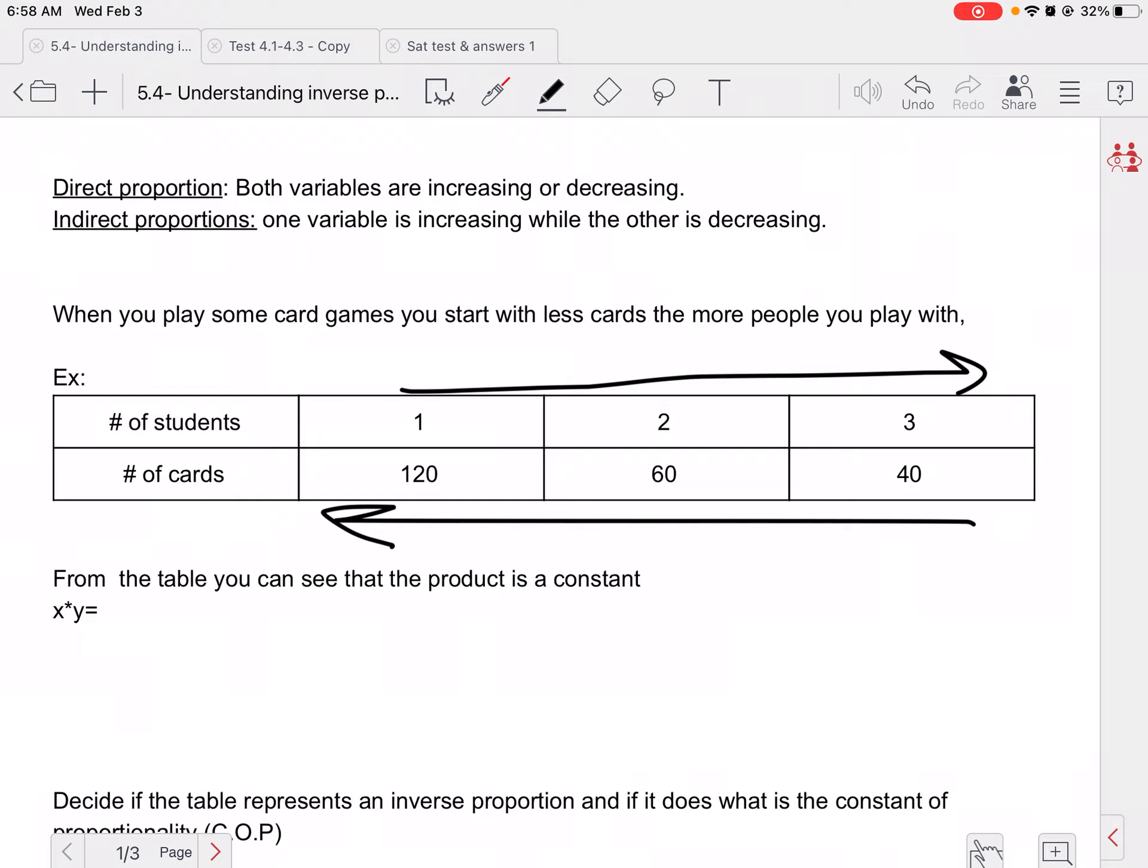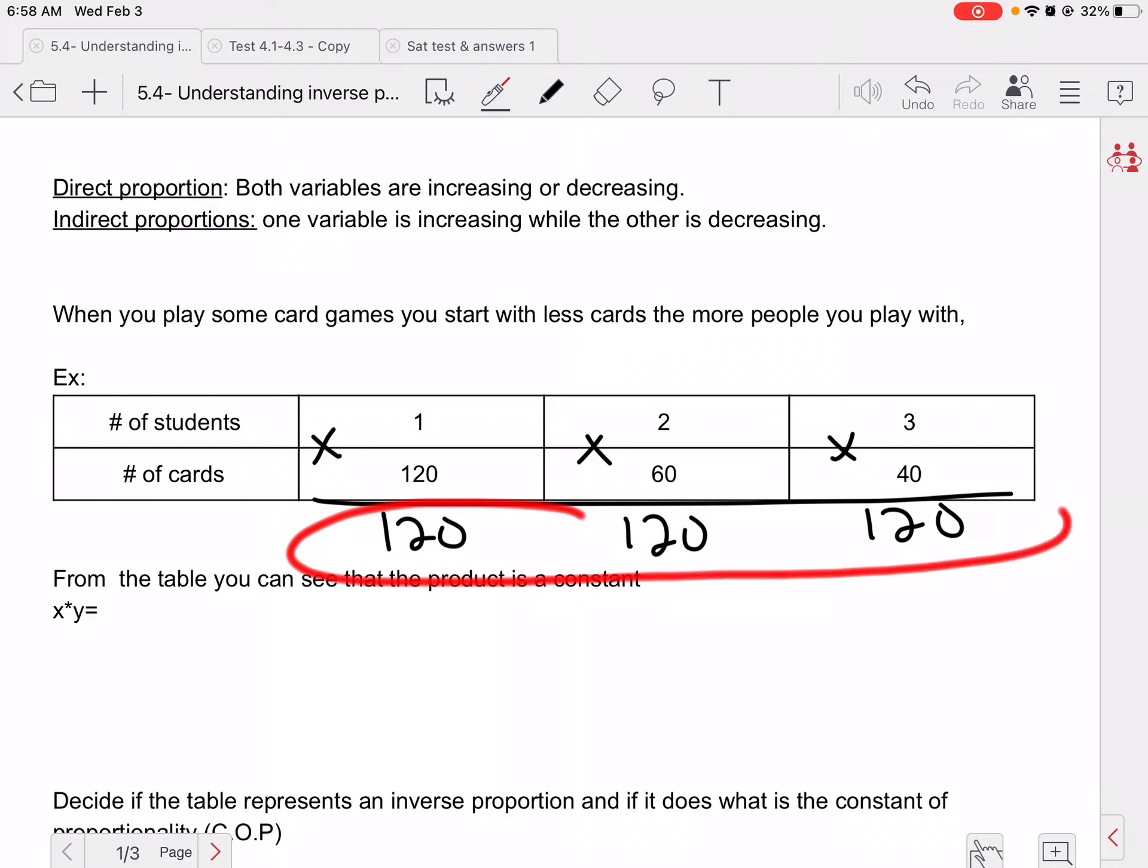So if we look at this, what is 1 times 120? That's 120. What is 2 times 60? That is 120. And 3 times 40 is 120. And notice these are all the same. And when they were all the same in the direct proportion, we called that the constant of proportionality, right? The COP.